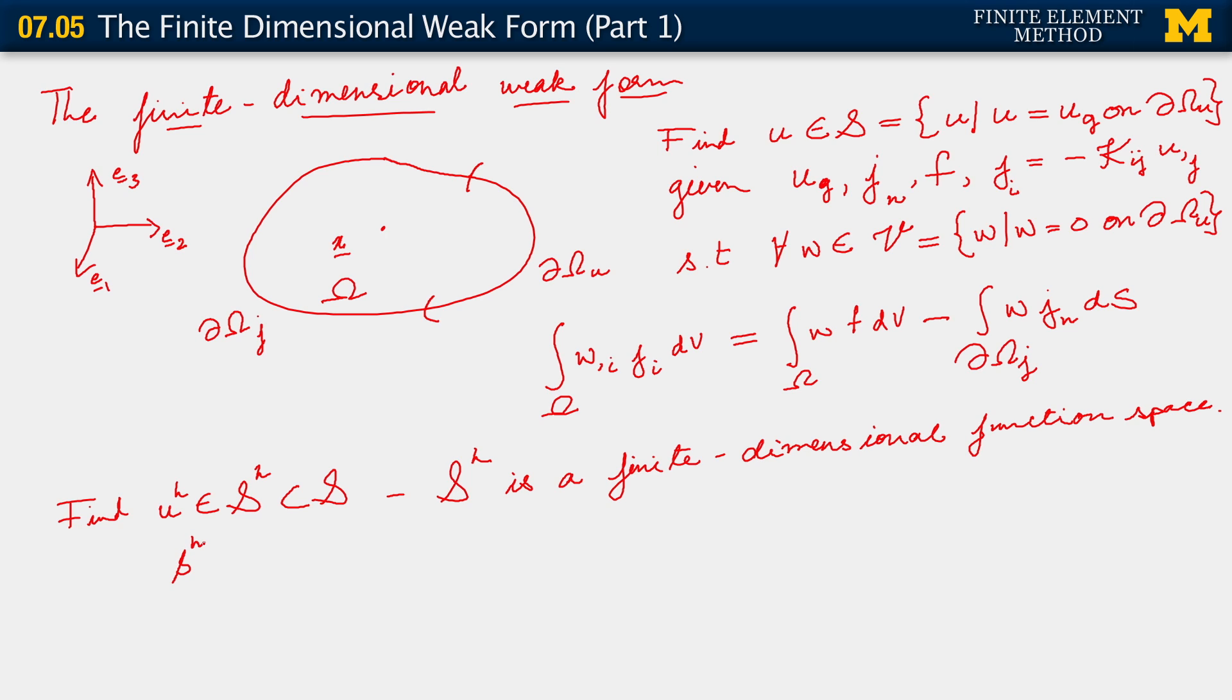Let's say a little more about s h. The way we construct s h is, again, going to look like we did, like everything we did in the 1D problem. s h now consists of functions like u h. And now we specify, as we did in the 1D problem, that we're interested in functions that live in H1 over the domain of interest, over omega. All right? And because s h is a subset of s, it must inherit the Dirichlet boundary condition as well. So u h equals u g on the Dirichlet boundary.